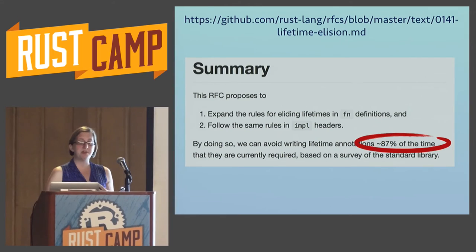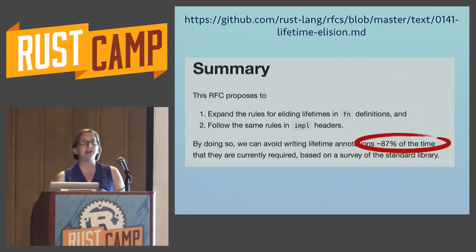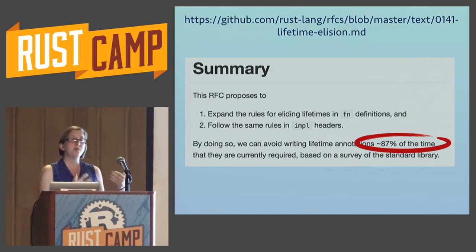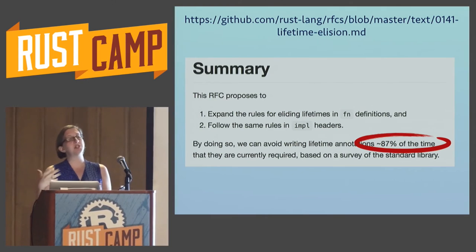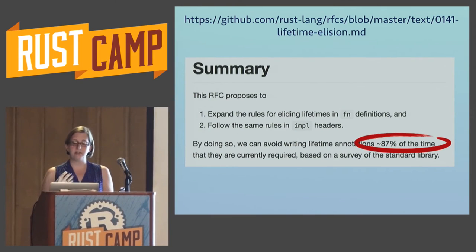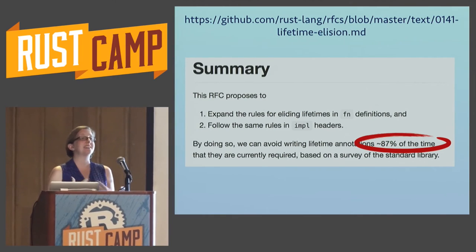For this RFC, Yehuda did a survey of existing Rust code at the time and found patterns of lifetime function signatures that we could then teach the compiler about, so you didn't have to write that boilerplate. As a result of that survey and the added power to the compiler, lifetime annotations 87% of the time could be left out of your function signatures. The rules were not set out from the beginning of time — they emerged from looking at existing code and trying to make it better.